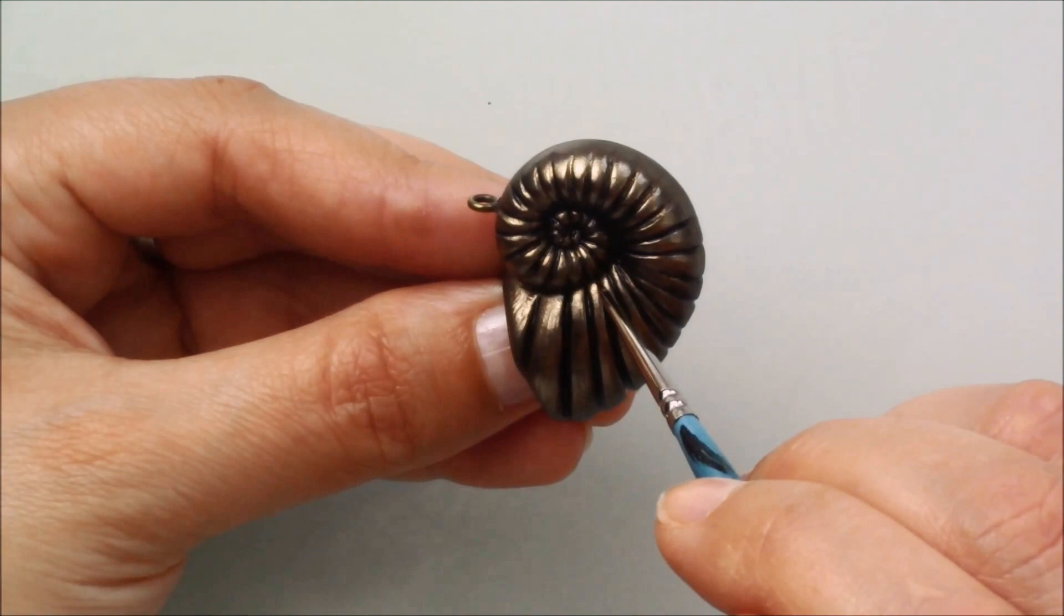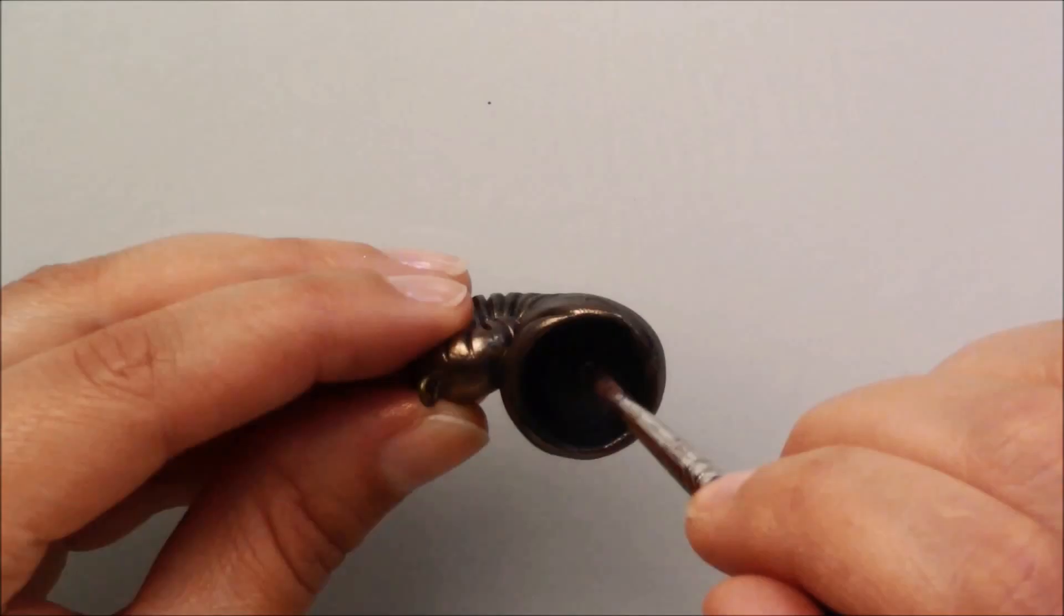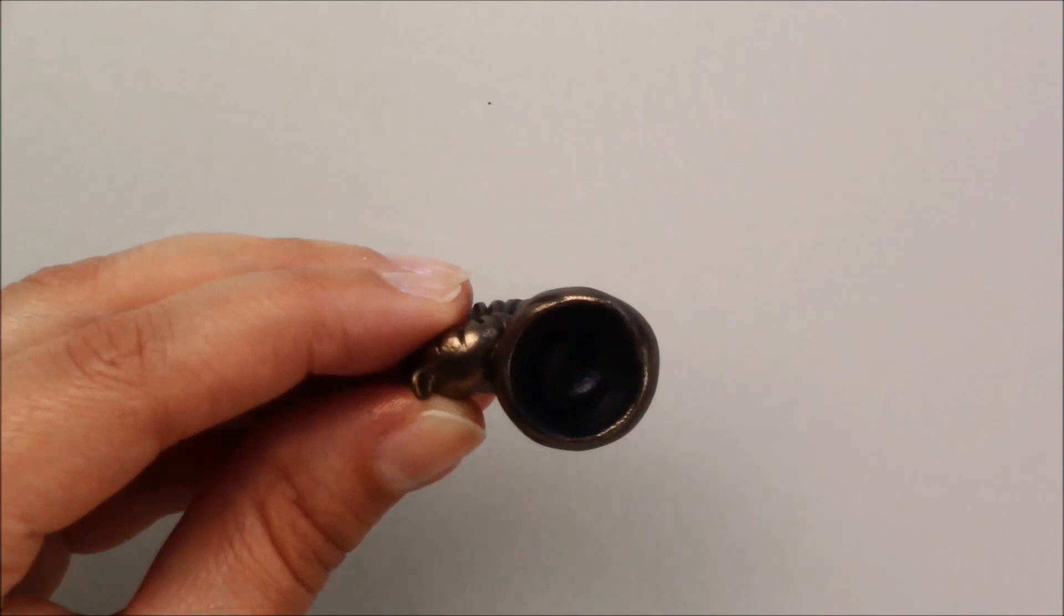I painted the hollow black and glazed the shell with Fimo gloss a couple of times to seal both the paint and the mica powder.